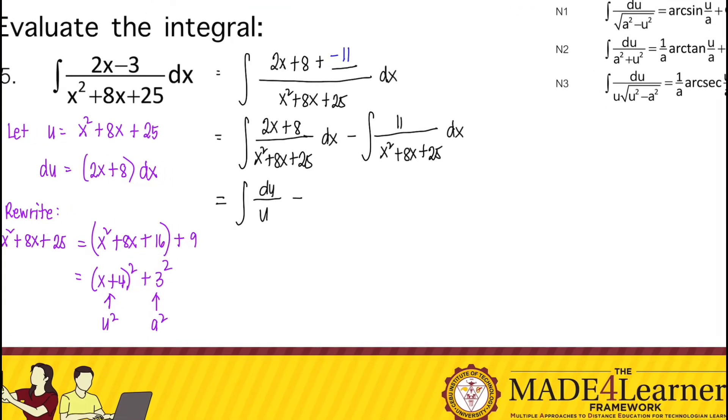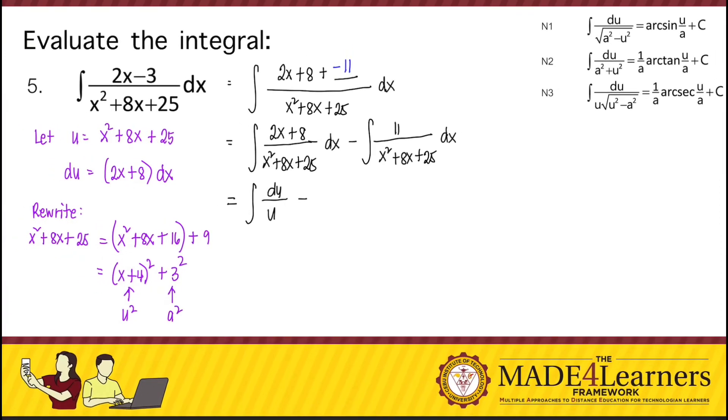So take note that the du now is just equal to dx. We can put 11 outside the integral sign and then we have 1 over, we rewrite this now as u squared plus 3 squared.